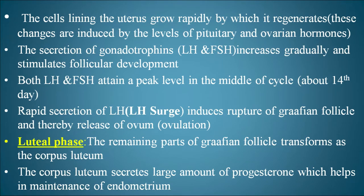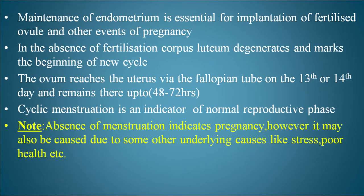The last phase is the luteal phase. The remaining parts of the Graafian follicle transform into the corpus luteum, which secretes large amounts of progesterone. This helps in the maintenance of the endometrium, which is essential for implantation of the fertilized ovum. In the absence of fertilization, the corpus luteum degenerates, marking the beginning of a new cycle.